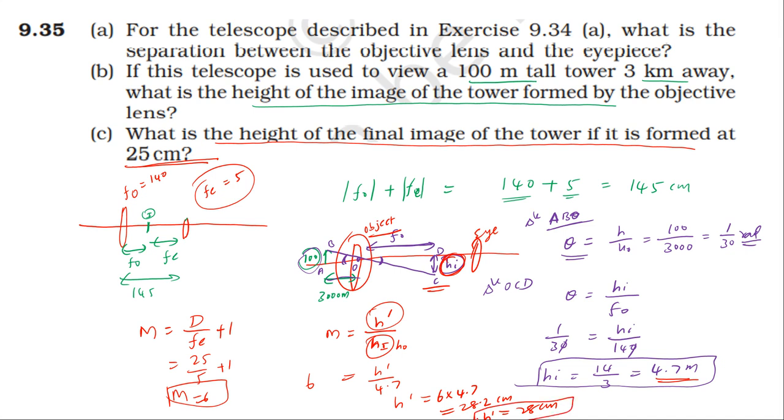The magnification at 25 centimeters, the least distance of distinct vision, is fe plus 1, which is 6. The image size by object size, where the object size is the size produced by the objective lens, 4.7. Final image size divided by eyepiece object size of 4.7.